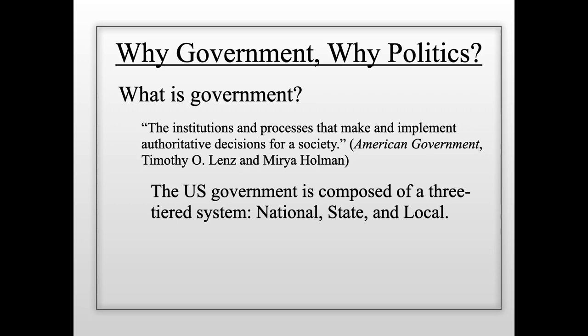The U.S. government is composed of a three-tiered system: national, state, and local. Our government isn't centered in only one place. The national government makes decisions for the whole country, state government makes decisions for one particular state like New York, and local governments make decisions for a local area. Here, New York City is our local government, New York State is our state government, and the United States is our national government.